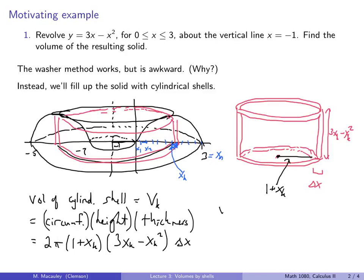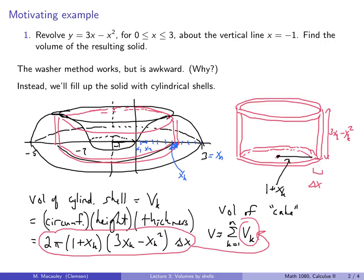So the volume of the original, of the, I'm going to say the cake, it's like our angel food cake, is V, is approximately the sum of k equals 1 up to n of vₖ. And now, all you have to do is take that value and plug that right in for that. So now we have an approximate volume of our cake.